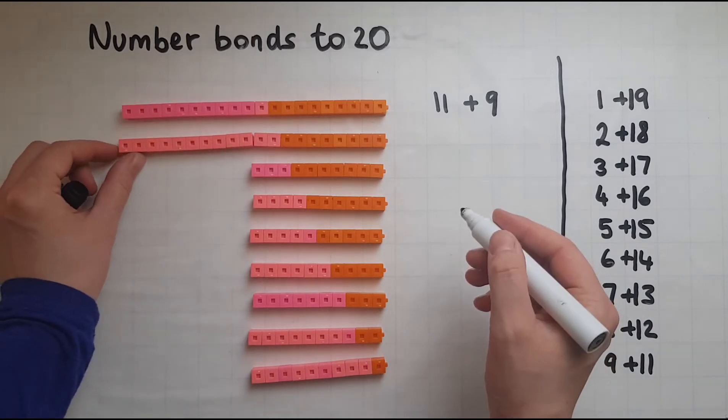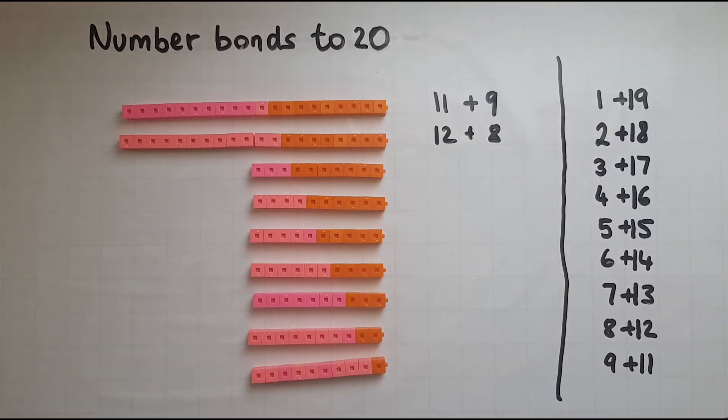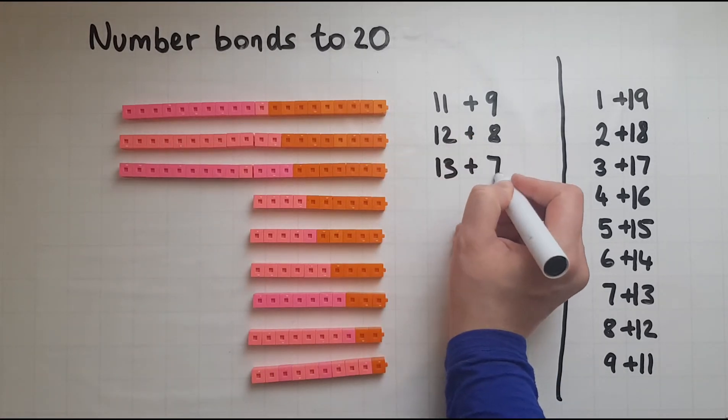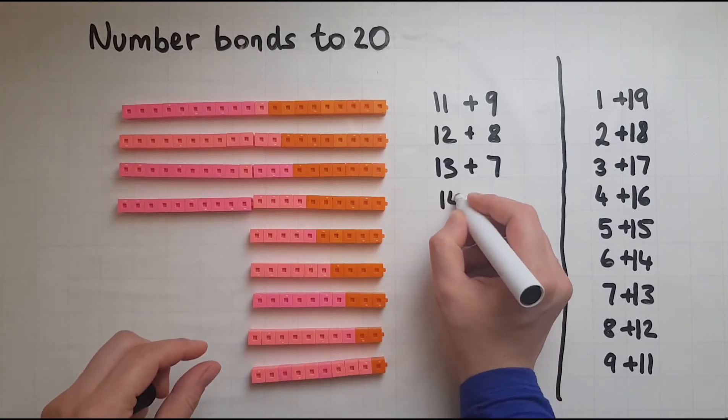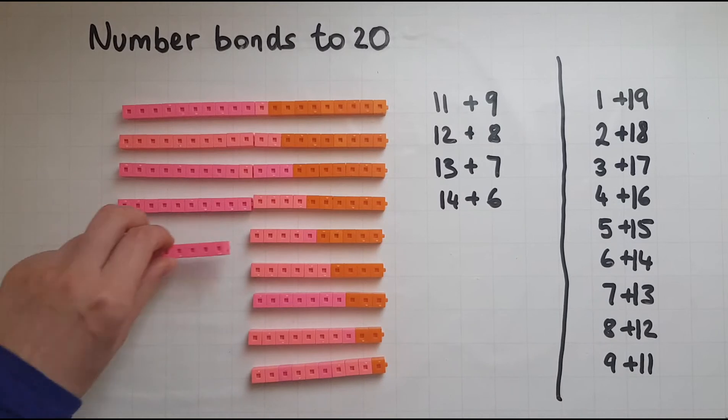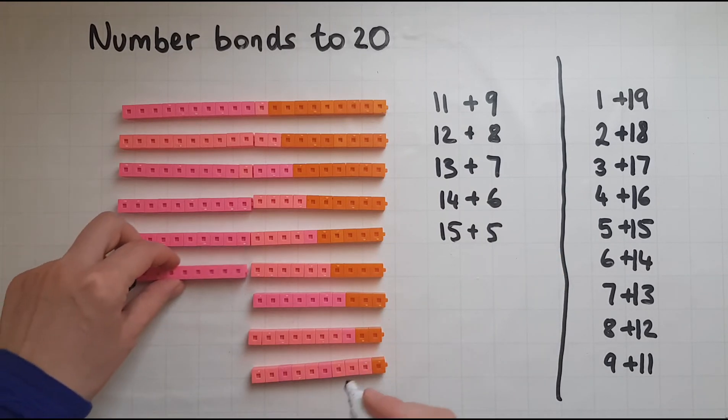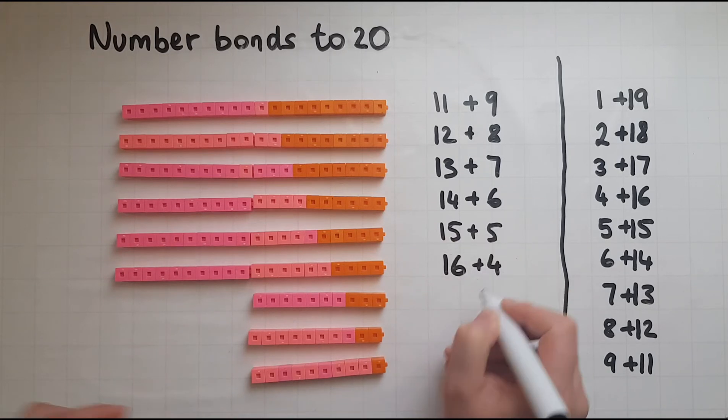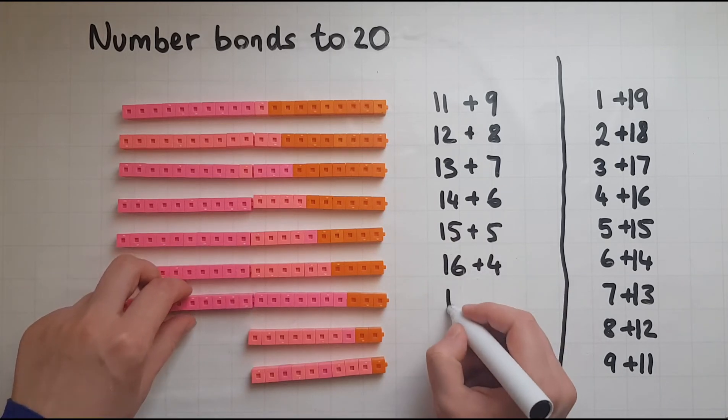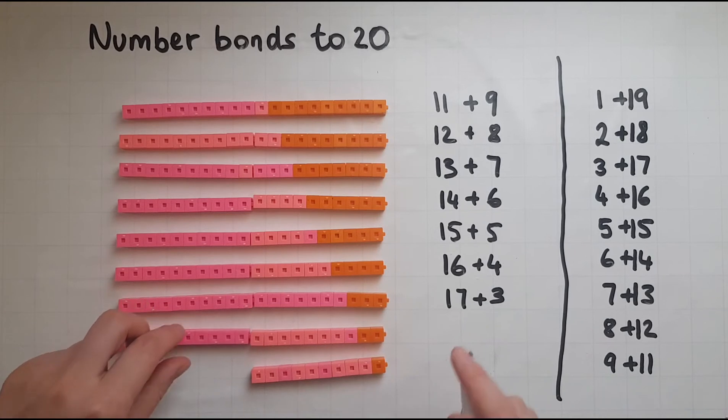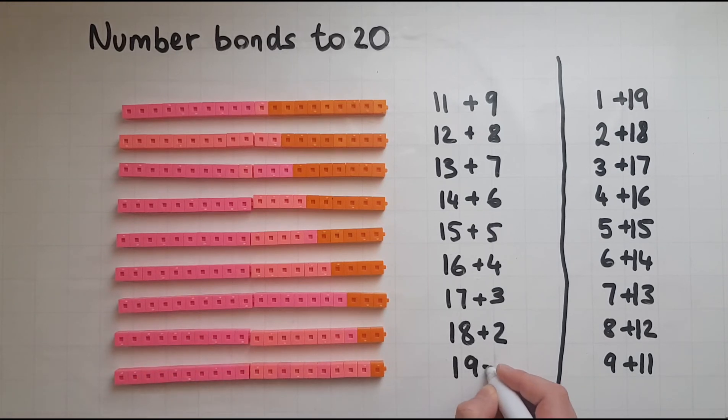Similarly, 12 and 8 still gives us 20, 13 and 7, 14 and 6, 15 and 5, 16 and 4, 17 and 3, 18 and 2, 19 and 1.